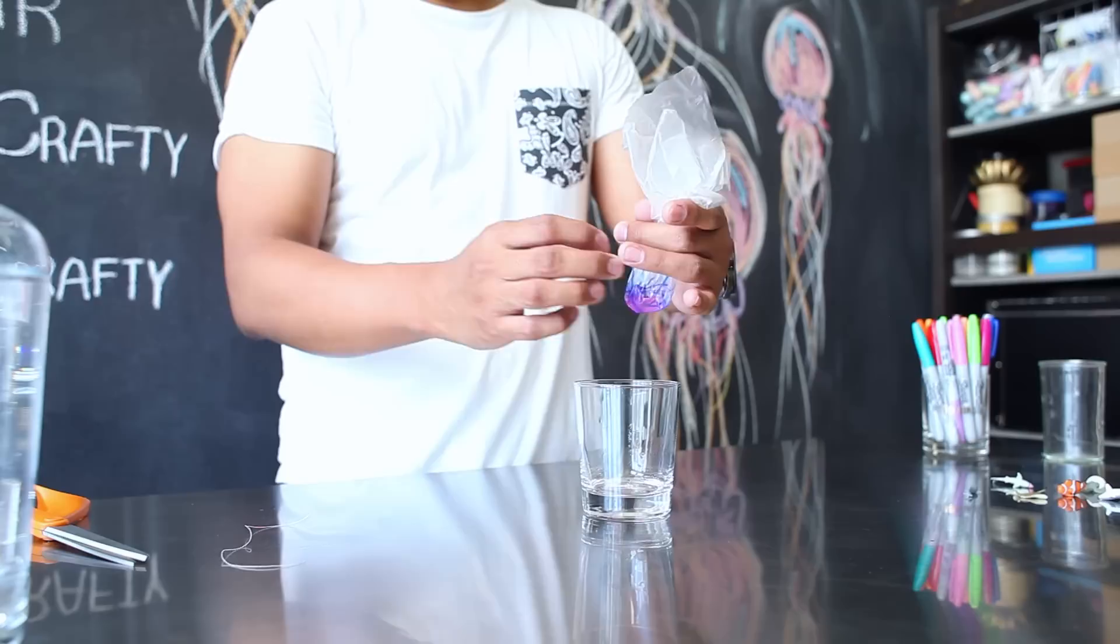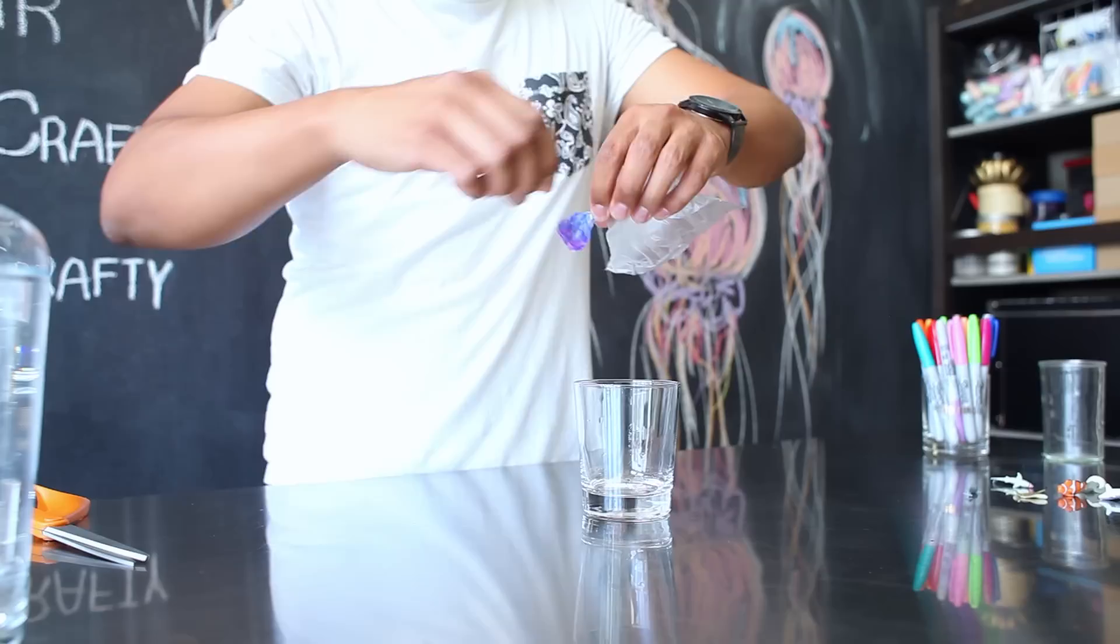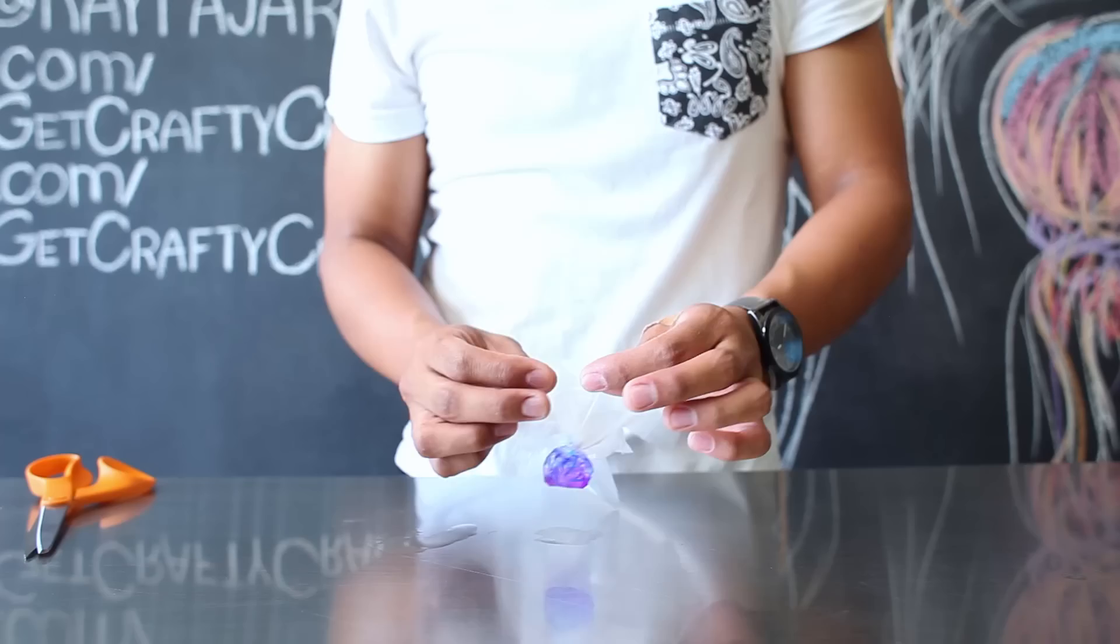This next part is a little tricky since you're going to lift your plastic bag. Slowly twist it and keep the water inside the head of your jellyfish so that it doesn't escape. Take your string and then tie it around the head.